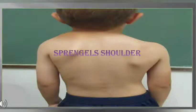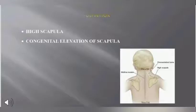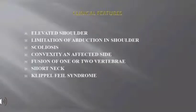Sprengel's shoulder, also known as high scapula or congenital elevation of the scapula. Clinical features include an elevated shoulder, with the shoulder blade higher on the back than the other, limitation of abduction in the shoulder, scoliosis with convexity on the affected side, and fusion of one or two vertebrae.